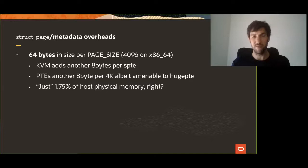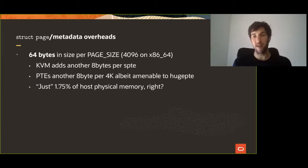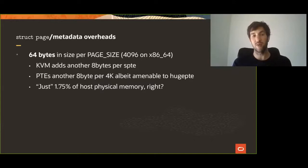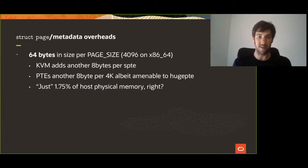On top of the structure, you have other overheads: you spend 8 bytes per EPT entry and in the process page tables you spend about 8 bytes as well per HPT entry. Although these costs can be amortized when you try to use huge pages, which amortize that page table cost to a great extent. So when you put it all together, we are just talking about 1.5% to 1.75% of total physical memory, which at first glance does not look like much.